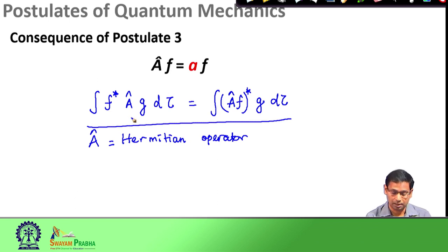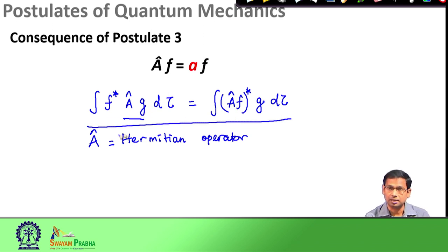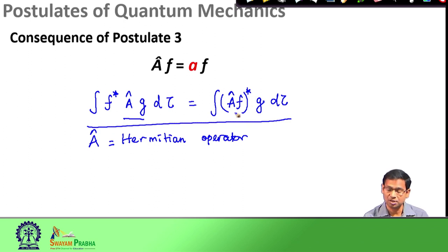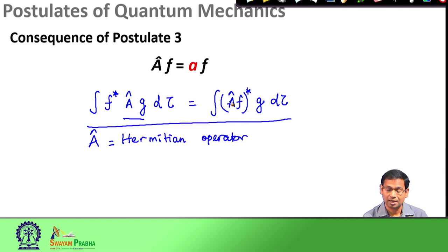Please note one important thing: on the left-hand side the operator A acts on function g. On the right-hand side, the operator A is actually acting on function f, not on function g. After the operation we multiply with another function and do the integration. The important thing is that on the left-hand side operator A acts on g, and on the right-hand side operator A acts on f. This is the condition for the Hermitian operator.